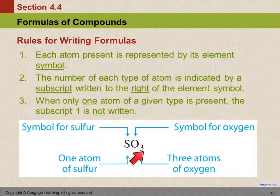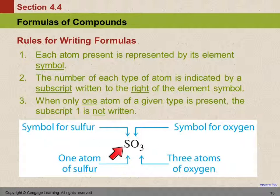So in SO₃, the 3 tells us there are three oxygen atoms. If we only have one atom of a particular element, we do not write a subscript 1 — chemists are just efficient that way. Why write a 1 if you don't need to? Writing the letter S tells us there's one atom of sulfur; if there were more, we'd write a different number. If there are no atoms of sulfur, we don't write the S at all. And O₃ tells us there are three atoms of oxygen.